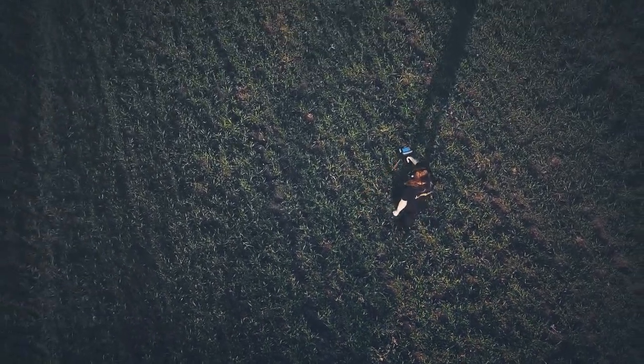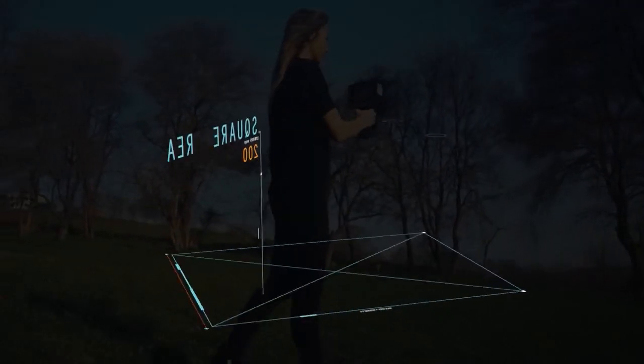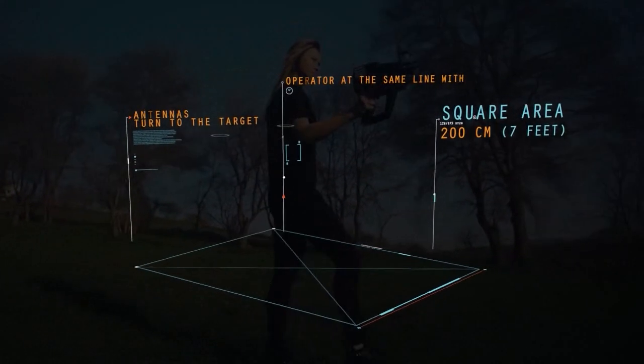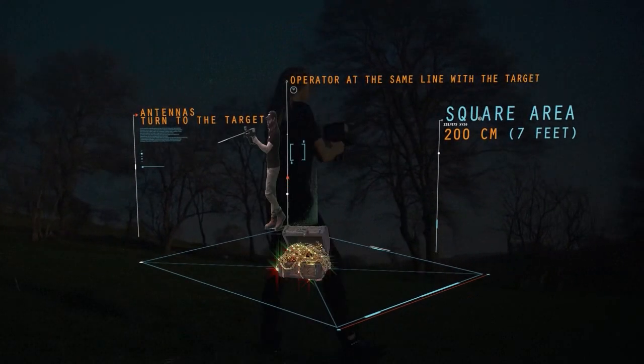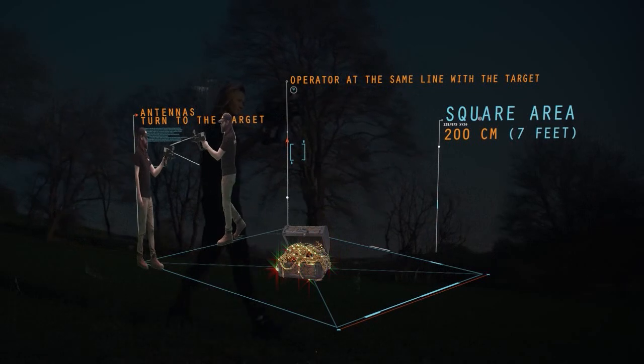Target Control with Boxing Method. This method allows the operator to determine the target location and to clarify the trueness of the target. A square is completed around the target with a distance of about 200 cm from the target center.